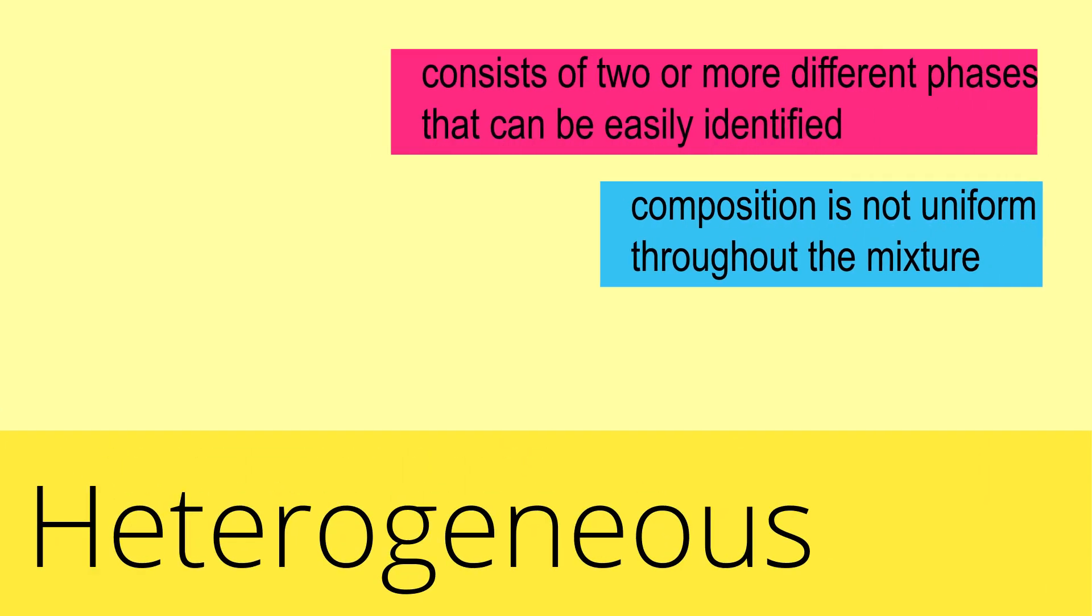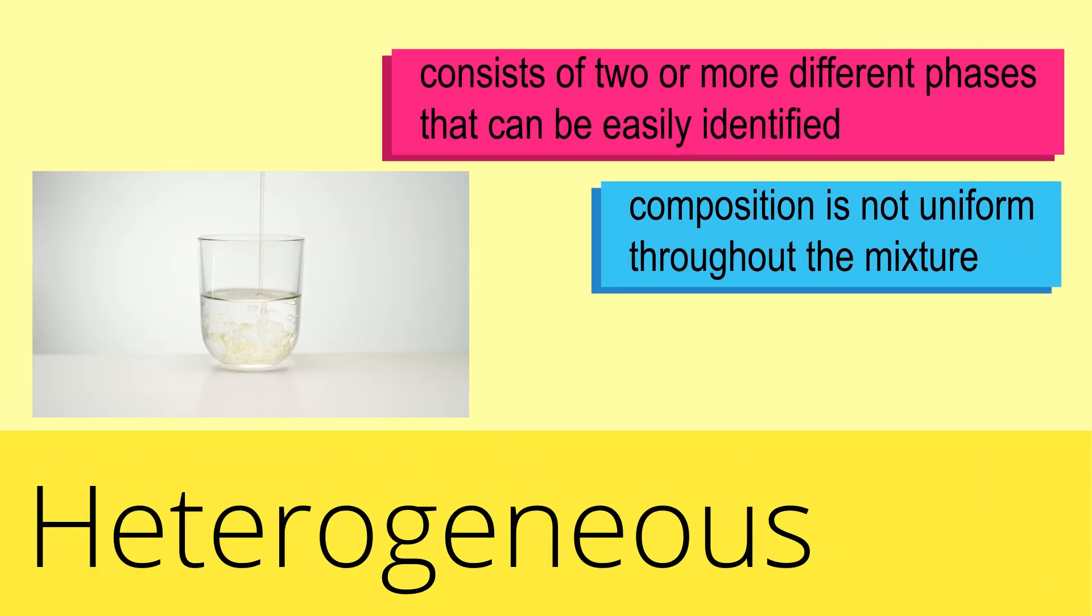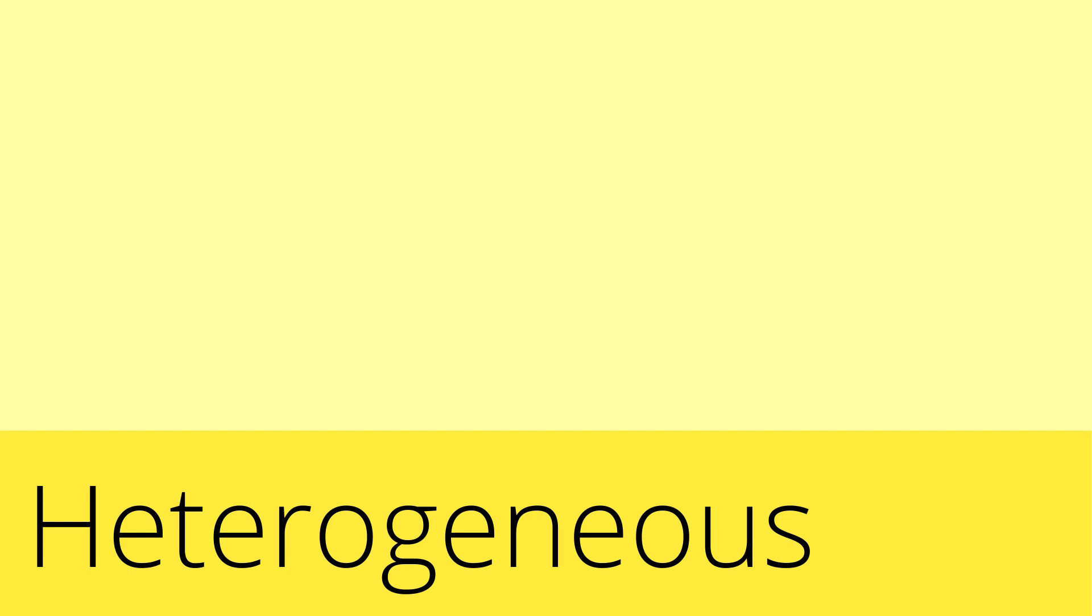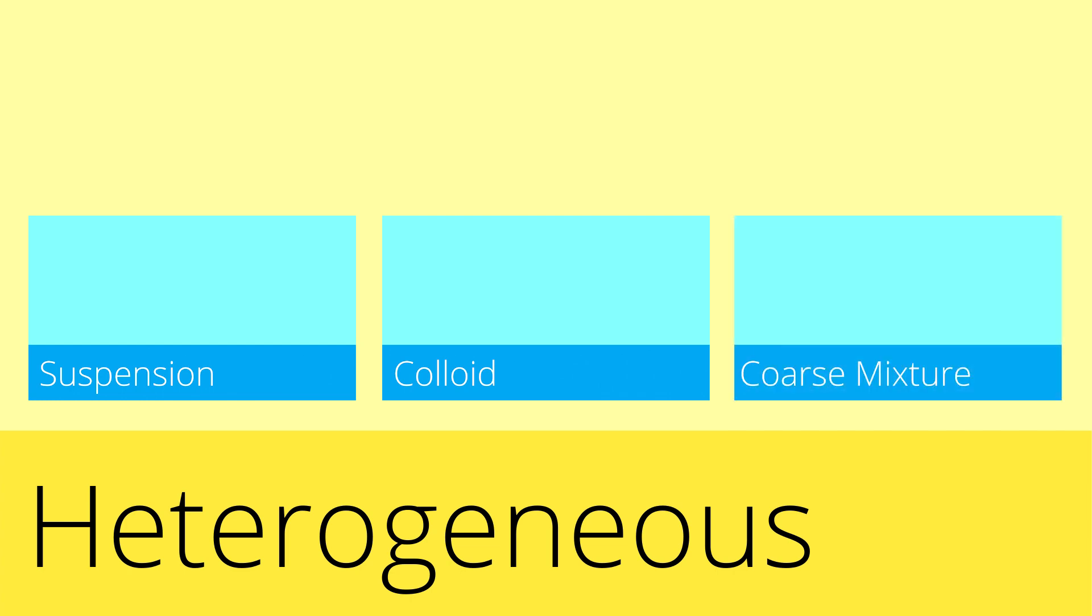Heterogeneous mixtures consist of two or more different phases that can be easily identified because they are formed separately. Its composition is not uniform throughout the mixture. An example is a mixture of oil and water. Heterogeneous mixtures can be further categorized into suspension, colloid, and coarse mixtures.